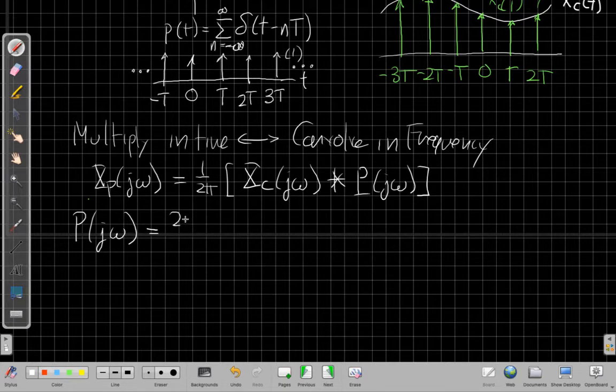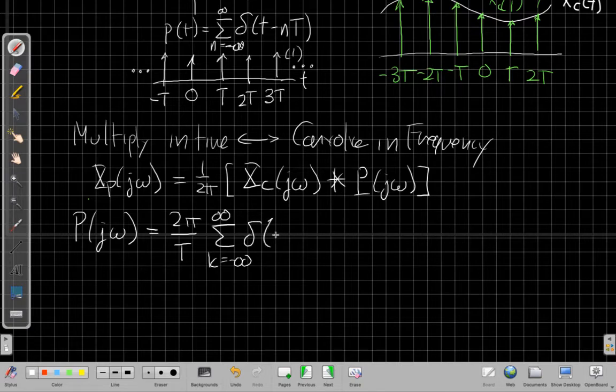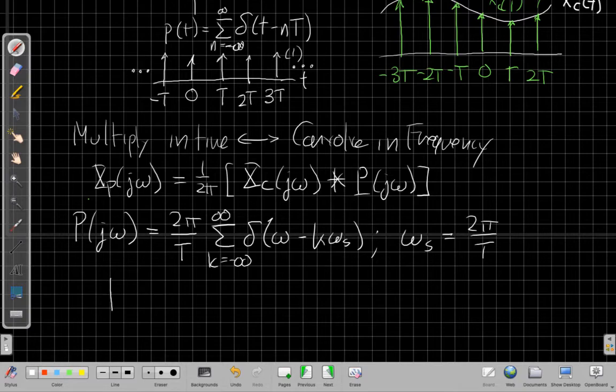So if I write it out, there's an amplitude factor out front, 2 pi over T times the sum as k goes from minus infinity to plus infinity of a whole bunch of impulses spaced every omega S, where the omega S is that radian sampling frequency, 2 pi over T. All right, so if these things are happening periodically every T in time, the frequency is 2 pi over the period in time, omega S. And so these impulses in frequency that I'm convolving with,